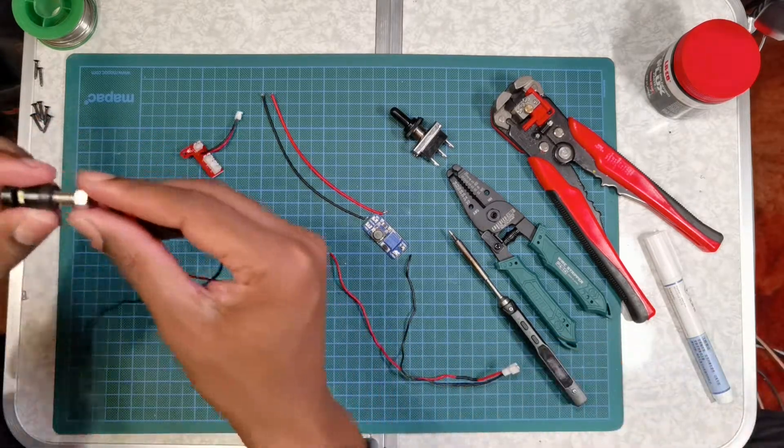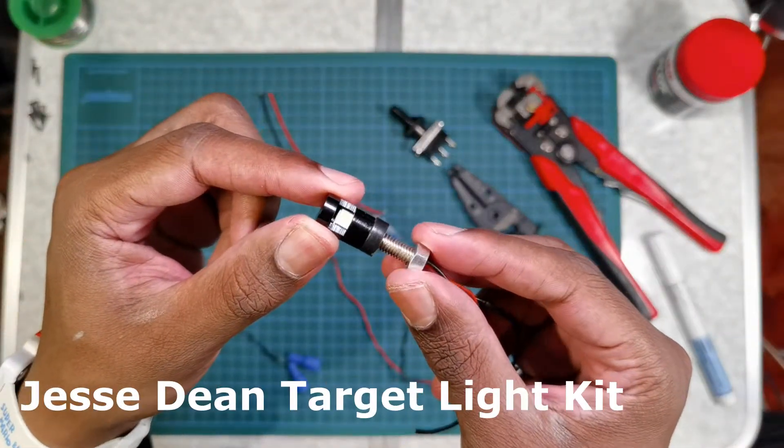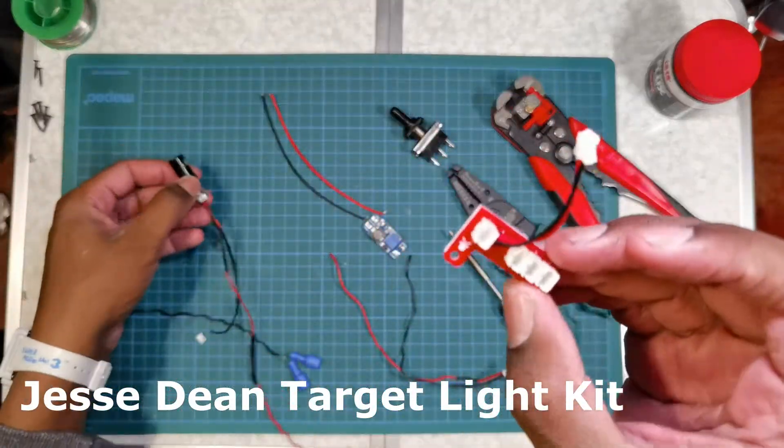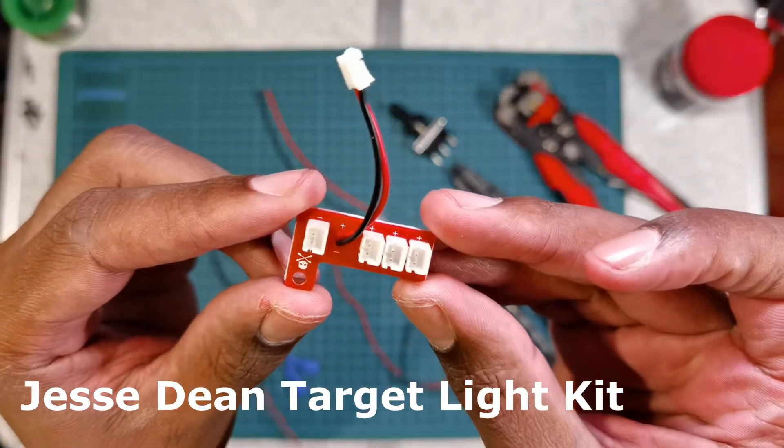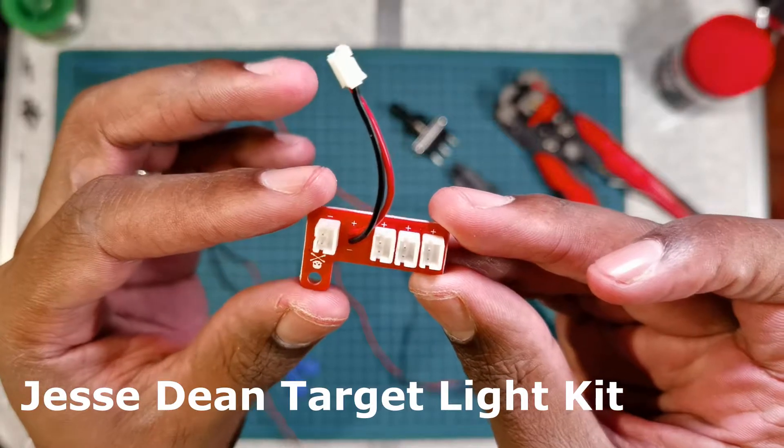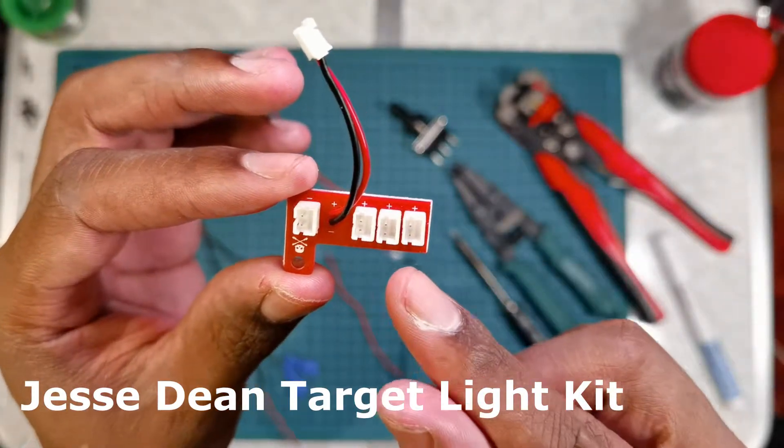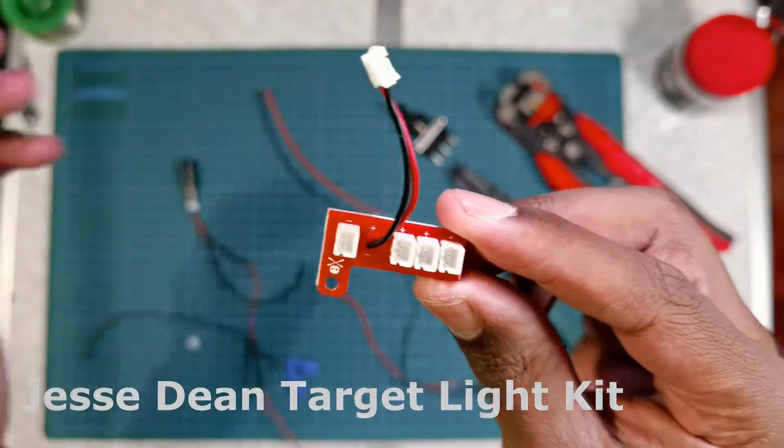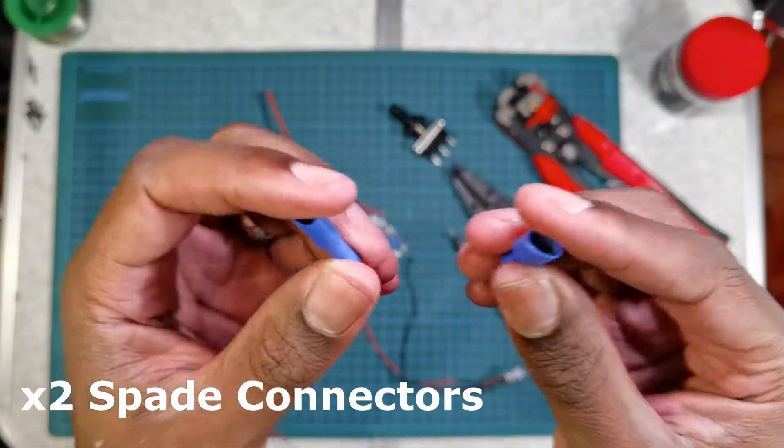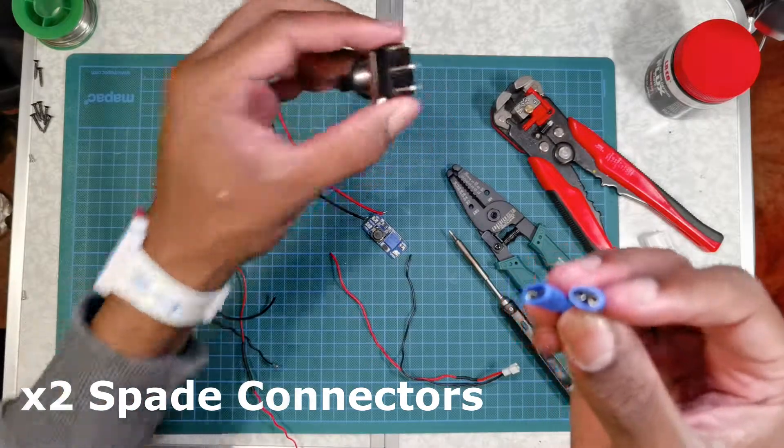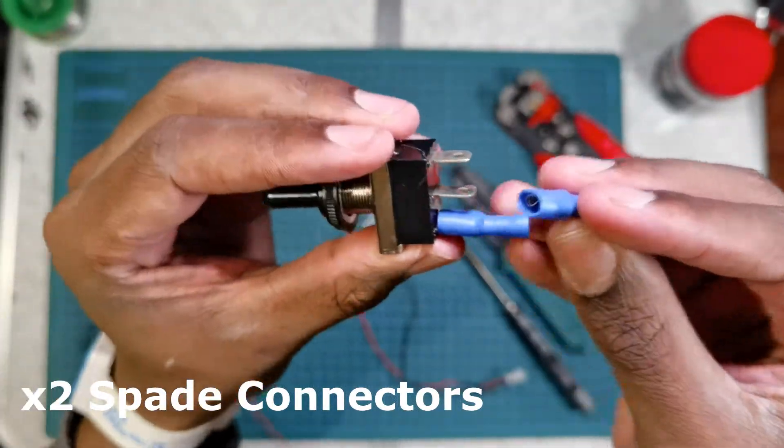First up you'll need a Jesse Dean target light. It also comes with this breakout board which is really nice because it means any future modifications you can just add it to one of these spare slots. Two spade connectors. These are for sliding onto the switch.